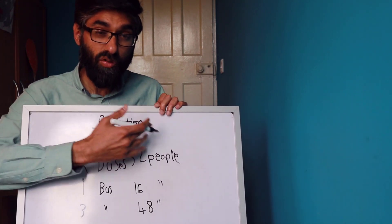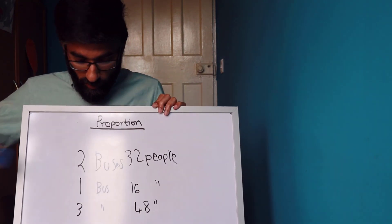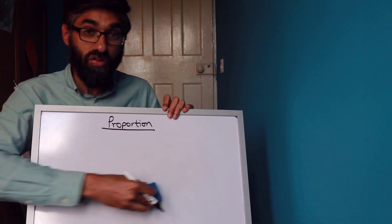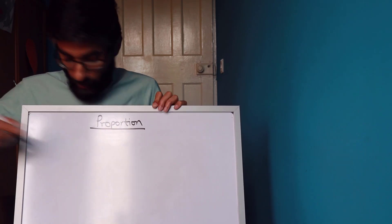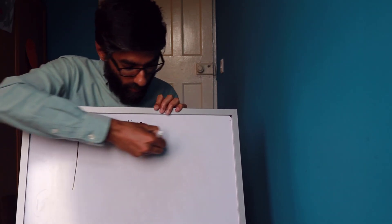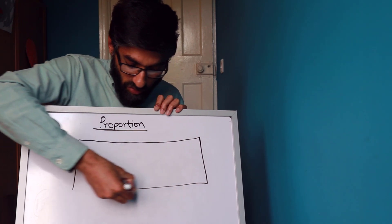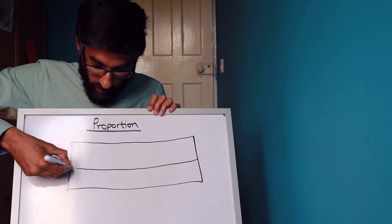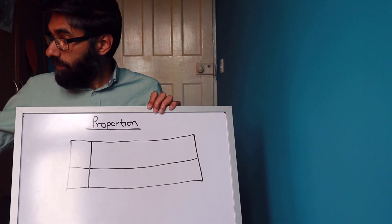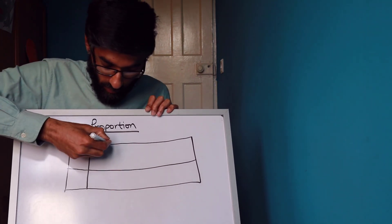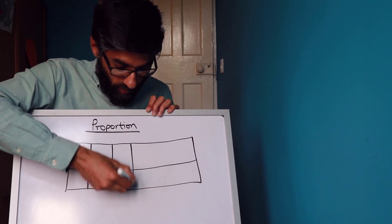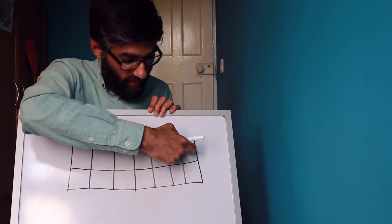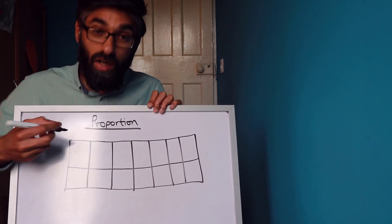Now we're going to look at ratio tables and solve proportion problems using them. You may have done ratio tables already. They are a really good way to solve proportion problems, even recipe problems. Let's start off by drawing one.